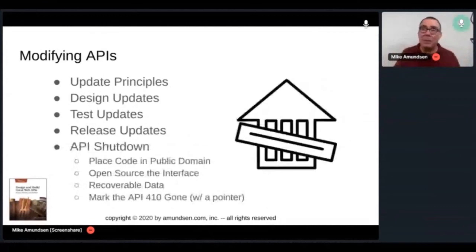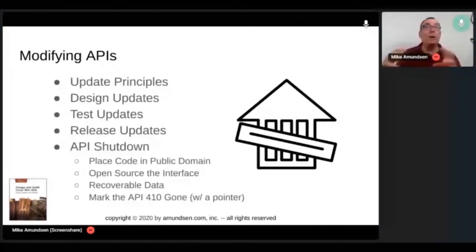When it's time to shut your API down, it's going to be at some point it's already solved its problem. Nobody needs it anymore. It's not profitable. It's outdated. Place the code in the public domain so others can still use it. If you can't do that, at least open source the interface. Everyone's been using the interface anyway. Place it in a repository somewhere so somebody can create their own if they still really need the service. Allow people to recover their data if you've been keeping their data. Allow them to have their own data back, and then mark your existing production API 410 gone with a pointer to where the new version is, or where the documentation is, or where the public domain code is, or where the interface is. API shutdown is really important. You're going to do a lot of it. If you create a lot of APIs, you're going to do a lot of shutdowns. So pay attention to this really important element in the story.